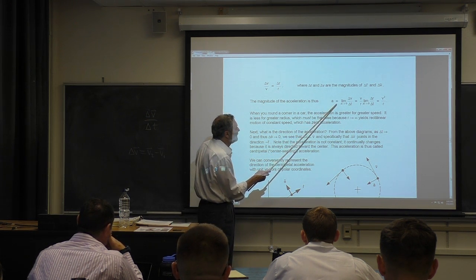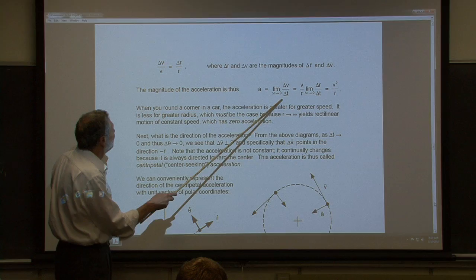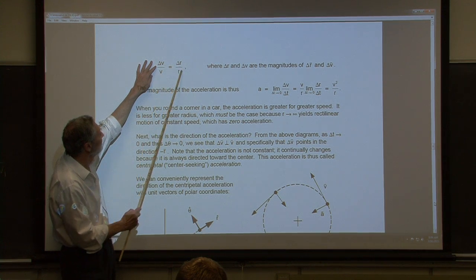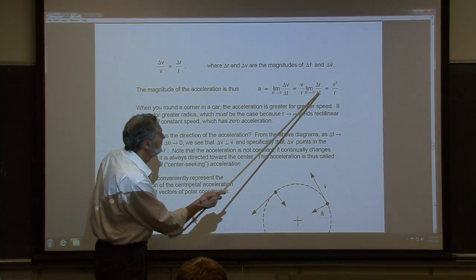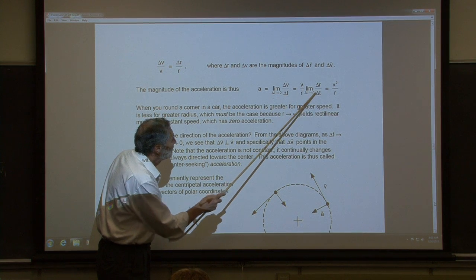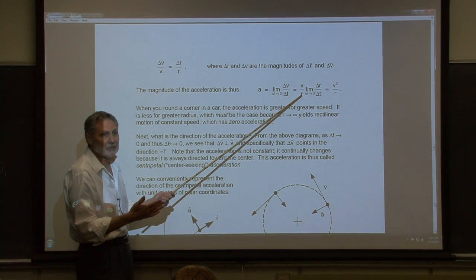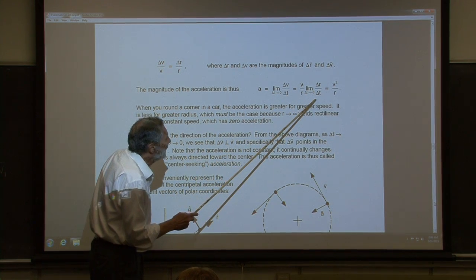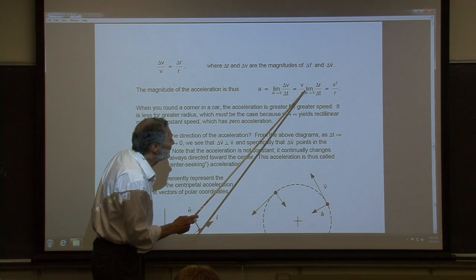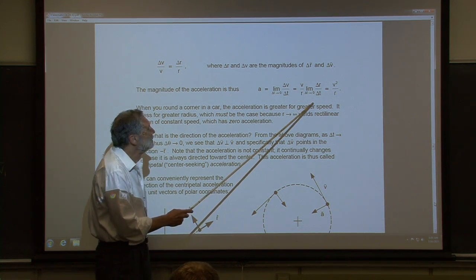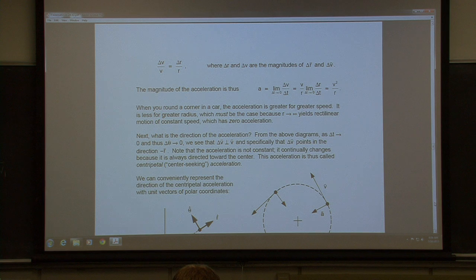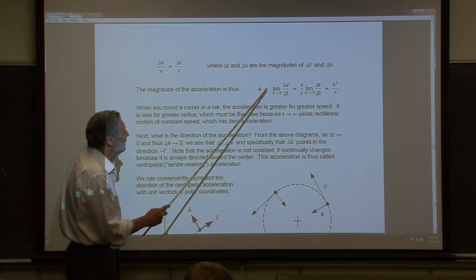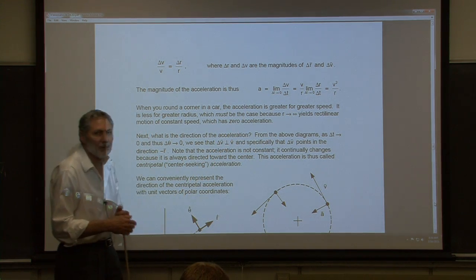The acceleration we're after is delta V over delta T. Substituting the expression for delta V using the scaling law, bringing out the constants — V and R are constants here, the speed and the radius of the circle — we end up with the magnitude of the acceleration equal to V squared over R.